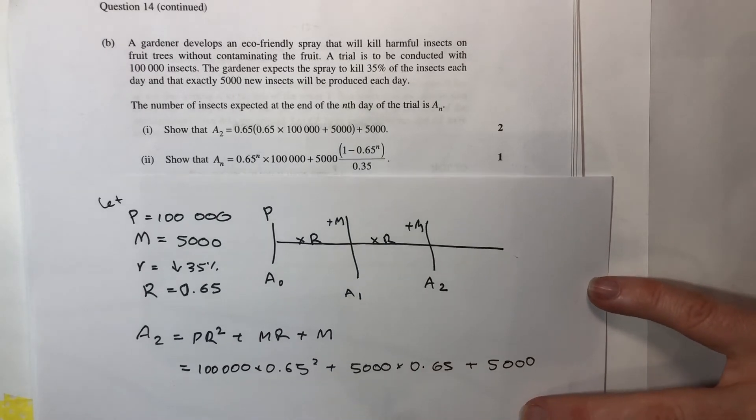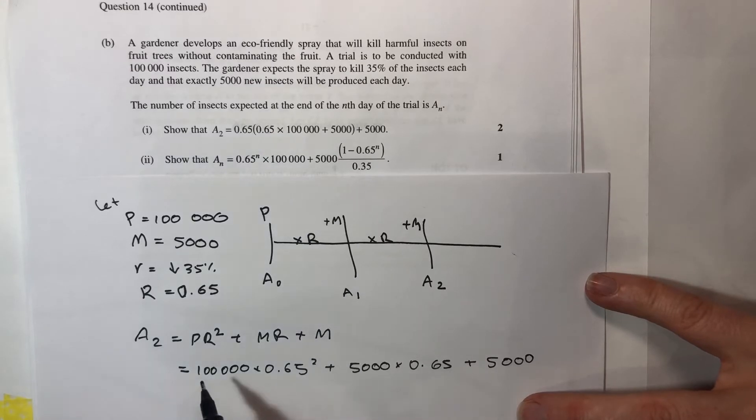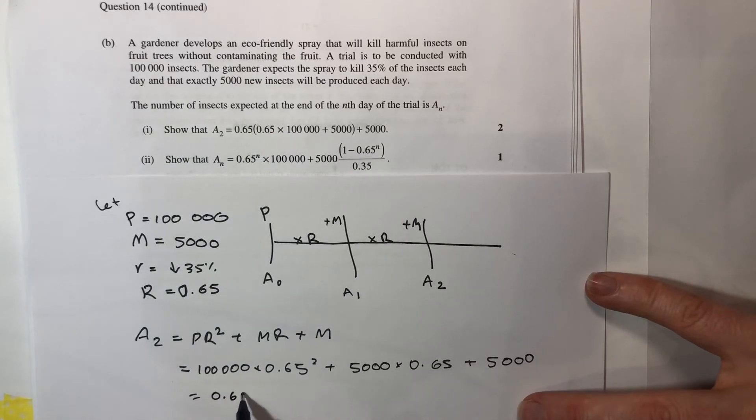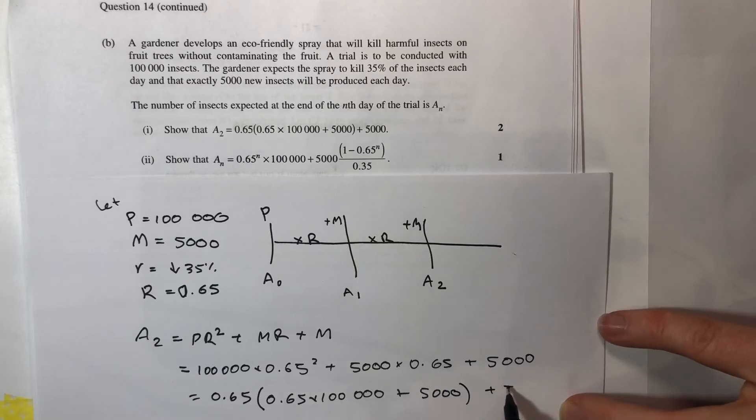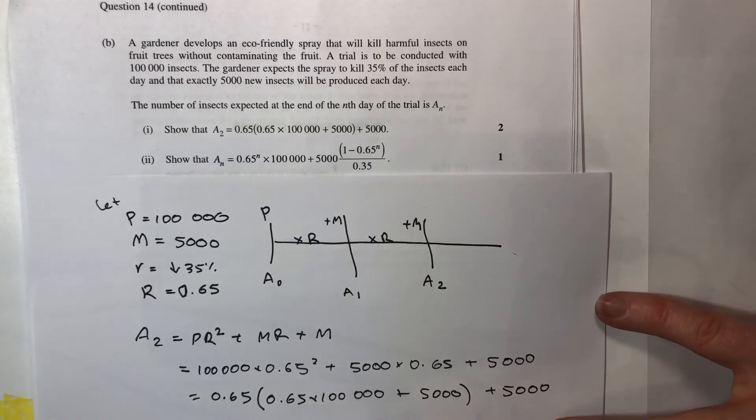So 0.65 and then 0.65 times 100,000 plus the 0.65 that came out the front here so plus 5,000 plus 5,000 again. And that's that first bit.